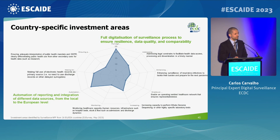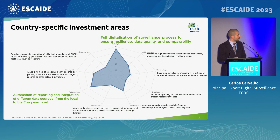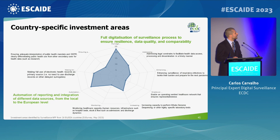To close, I present results of a survey shared in May this year, discussed at the National Focal Points for Surveillance Annual Meeting in Stockholm. The green highlighted results represent member states' opinions — not ECDC's, though we agree. The main identified areas of investment are full digitalization of the surveillance process, automation of reporting, and integration of different data sources. The needs appear aligned between countries, ECDC, and the European level.